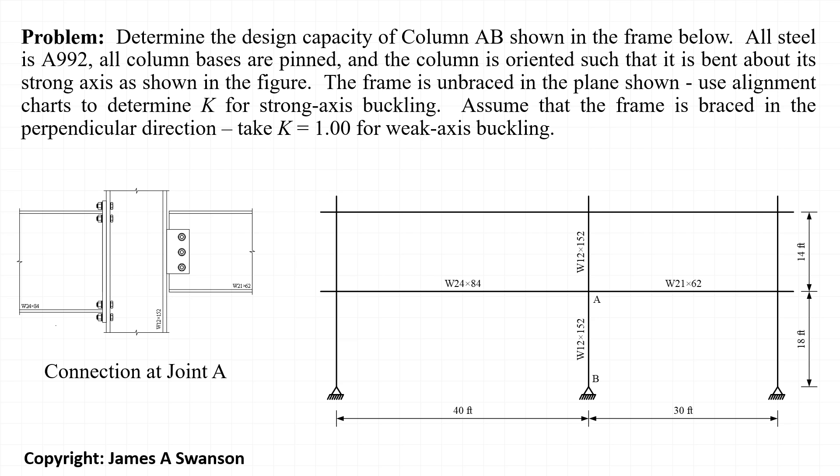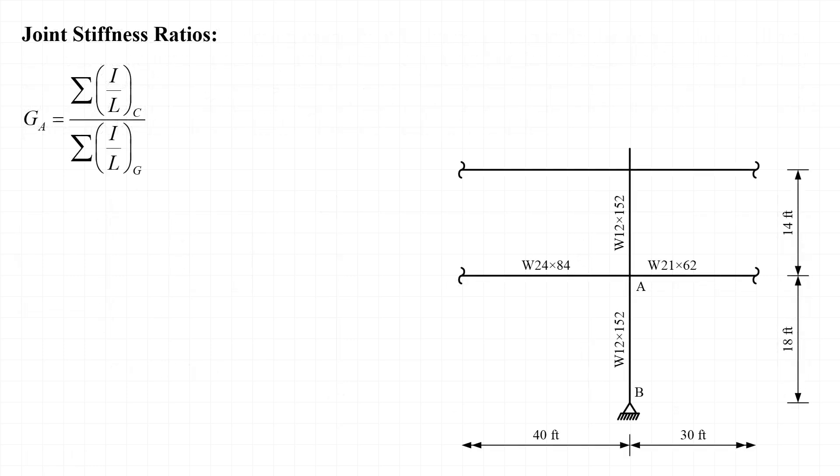A detail of the connections between the beams and the column at joint A is provided as well. If you haven't already watched it, check out my lecture on the basis of the effective length factors linked here, and check for links of associated videos in the comment section below.